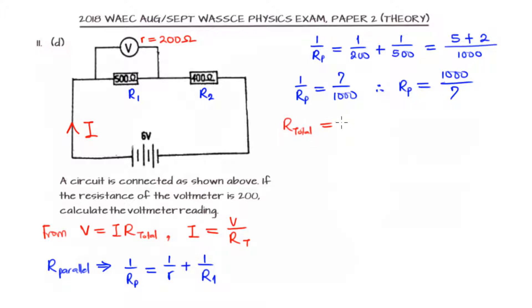The total resistance will now be the resistance in parallel plus the resistance R2 in series. So we have 1000 over 7 plus 400 over 1, and we find that LCM, that's 7. 1000 plus 7 times 400 is 2800, so that the total resistance is 3800 over 7. So now since we know the total resistance, we can find the value of the current.